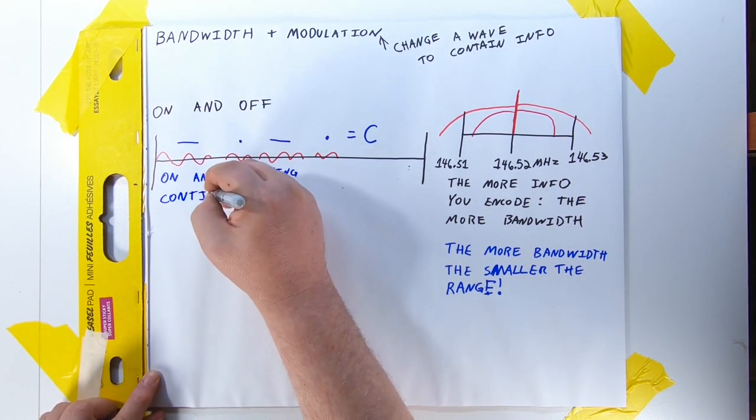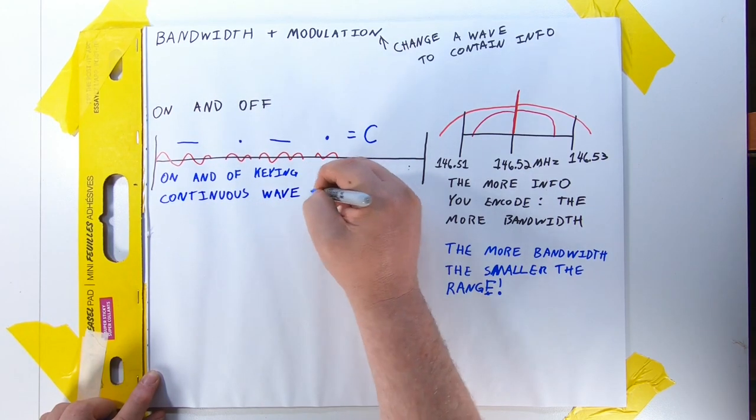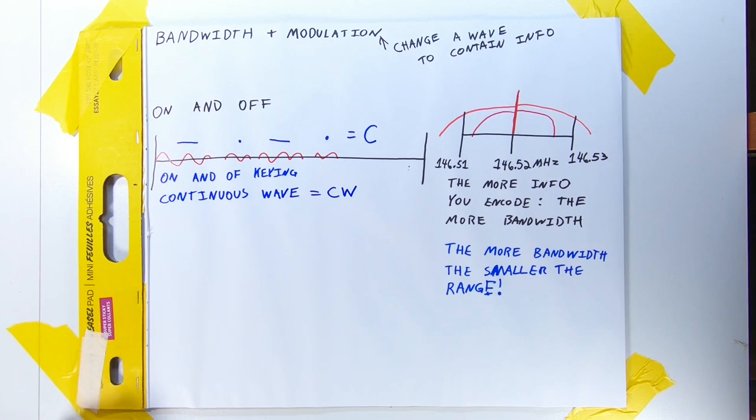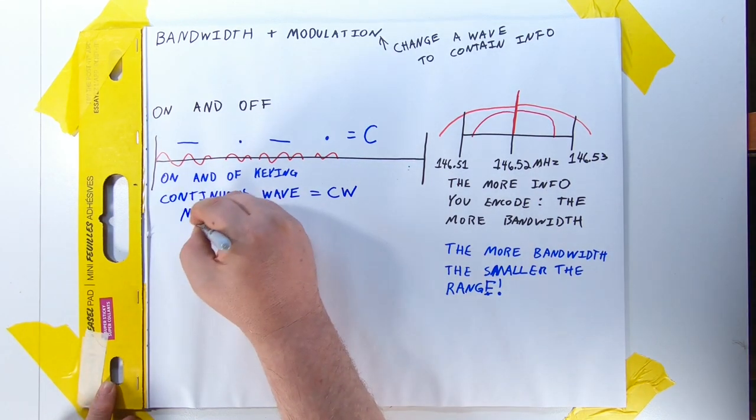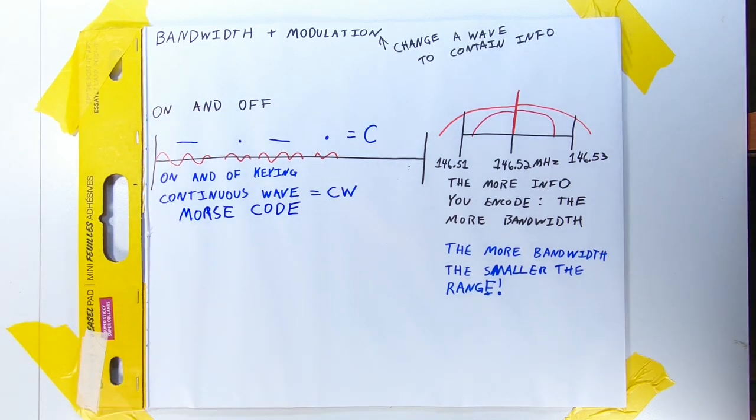In my example here, I have da dit da dit, which means I have turned the transmitter on for a long pulse, a short pulse, another long pulse, and then a final short pulse. According to Morse code, I have sent the letter C. Being the simplest modulation method, CW takes up the least amount of bandwidth and therefore can make the most range.